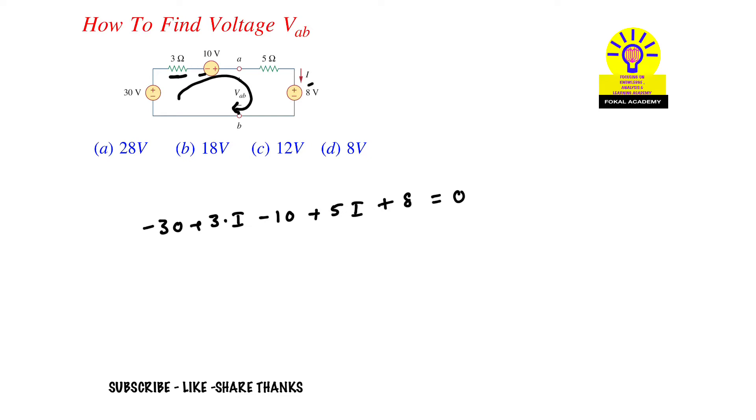Now by simplifying this we will get current I equal to 4 amperes. But according to the problem we want voltage V_AB.